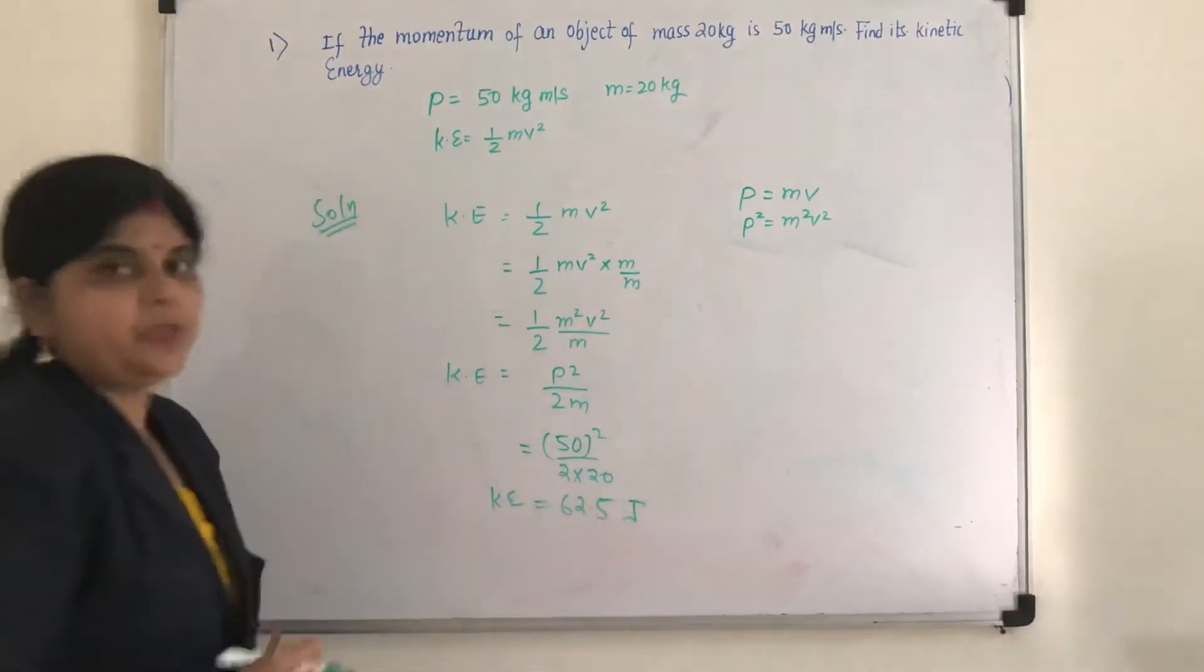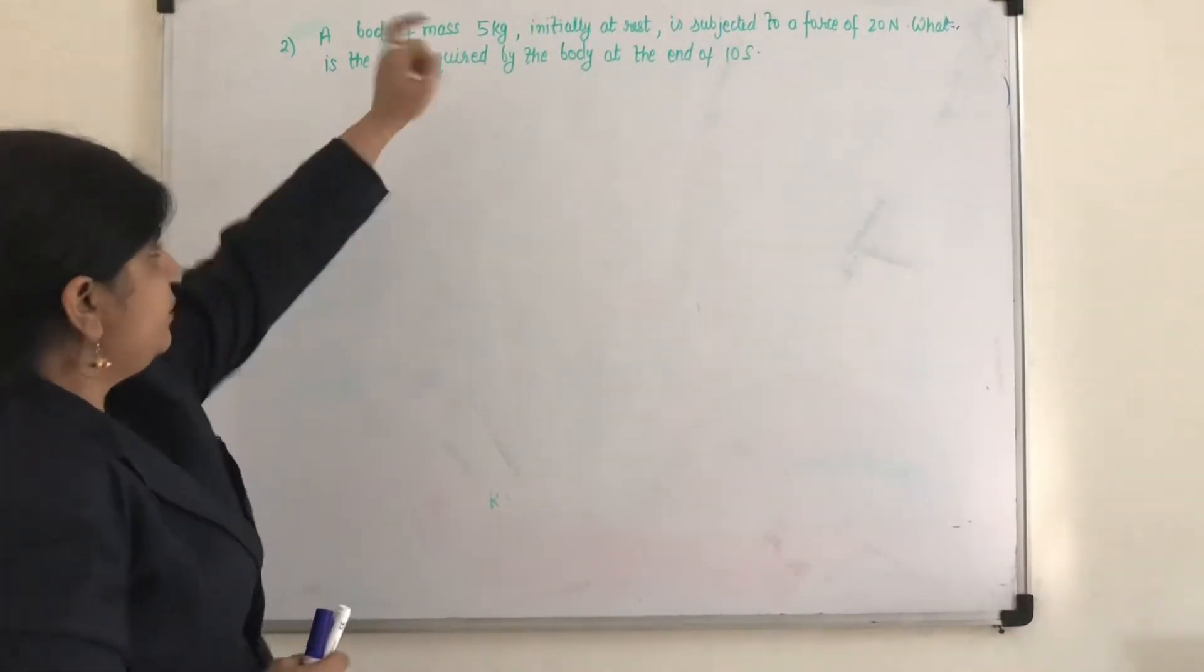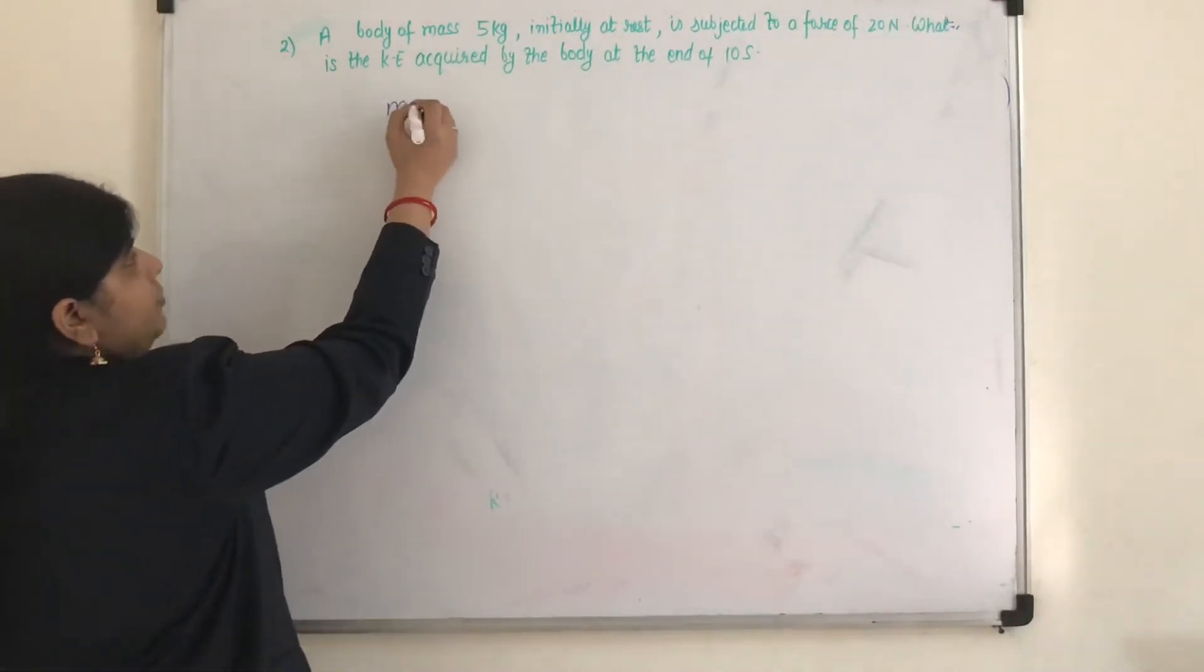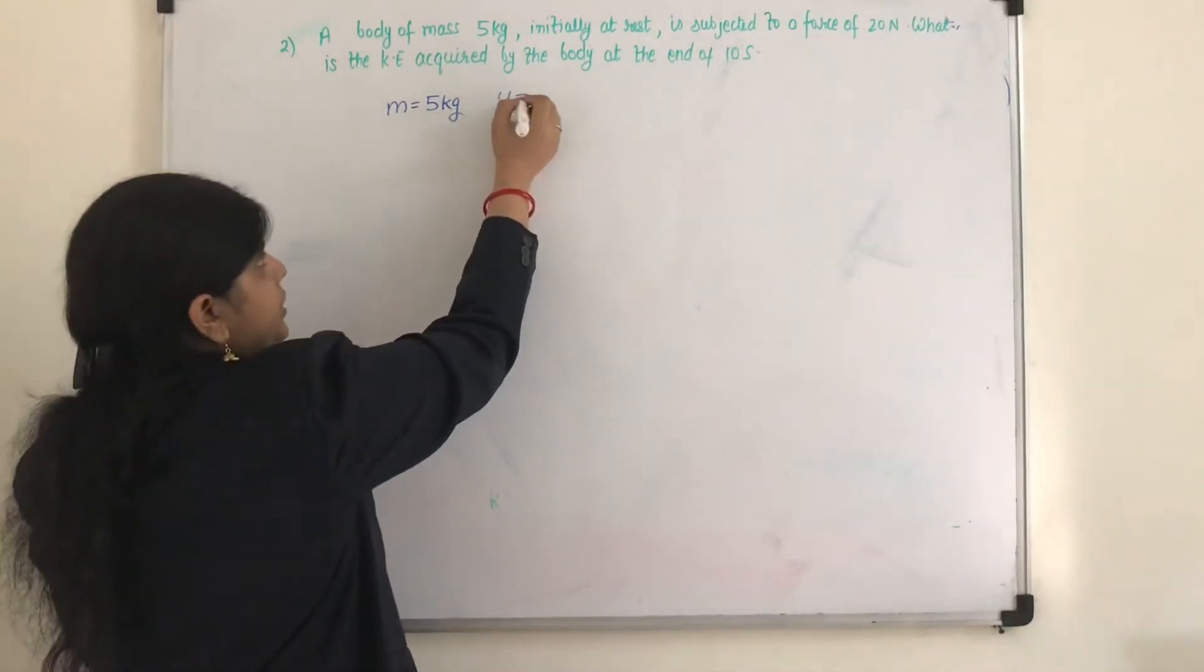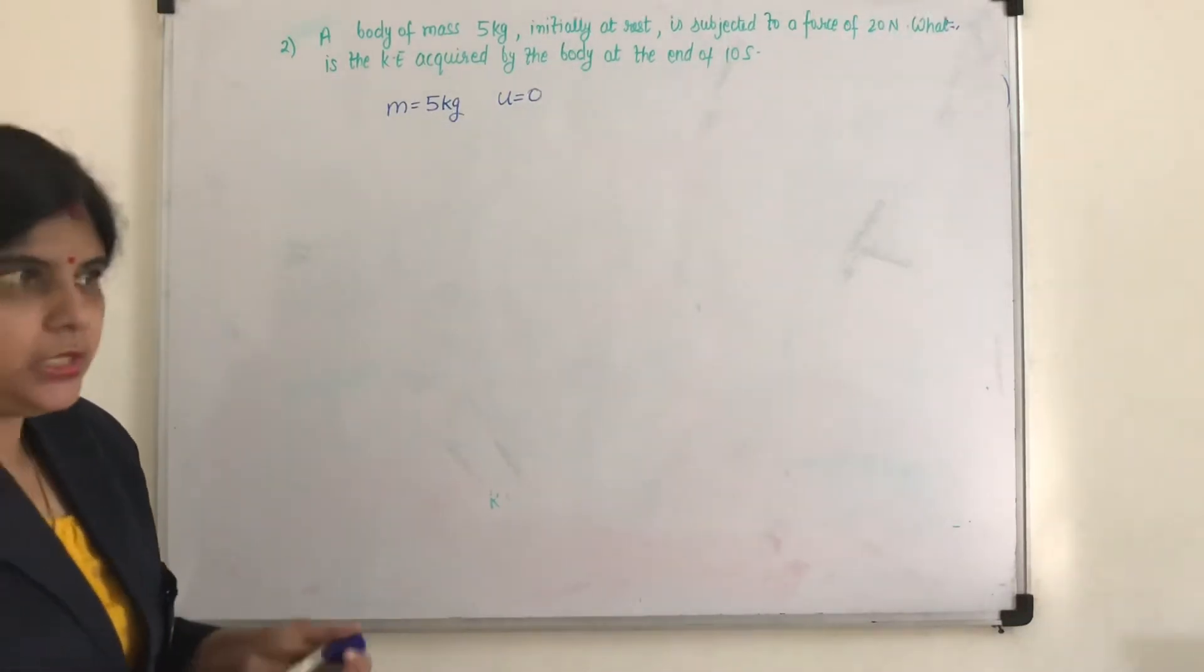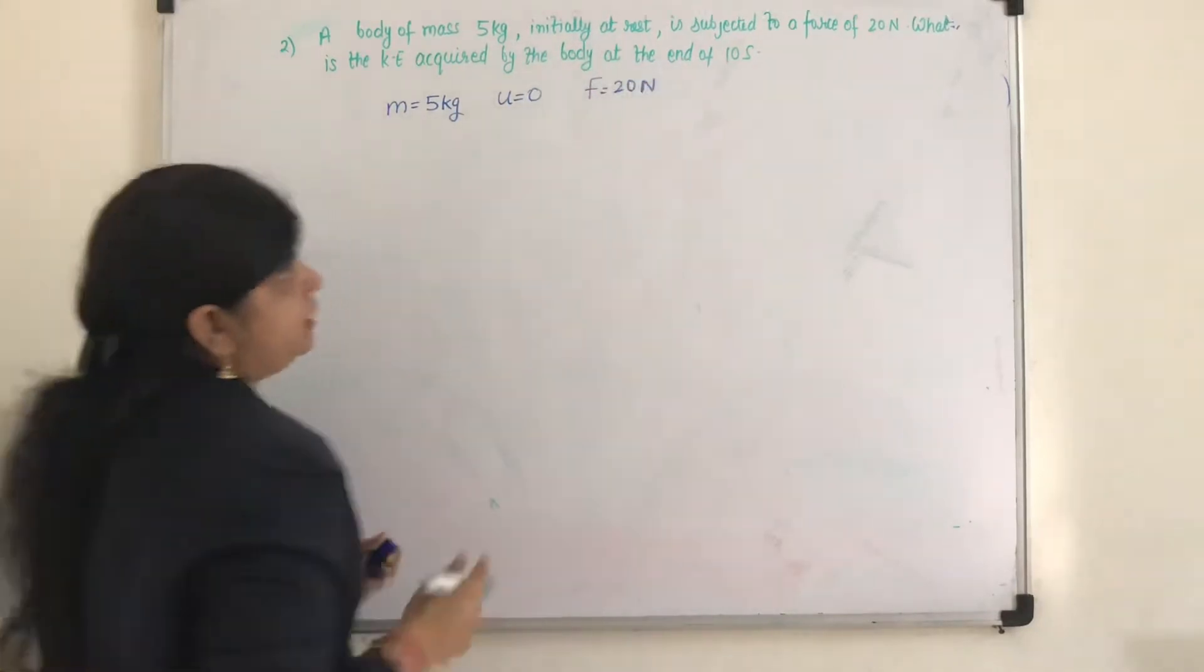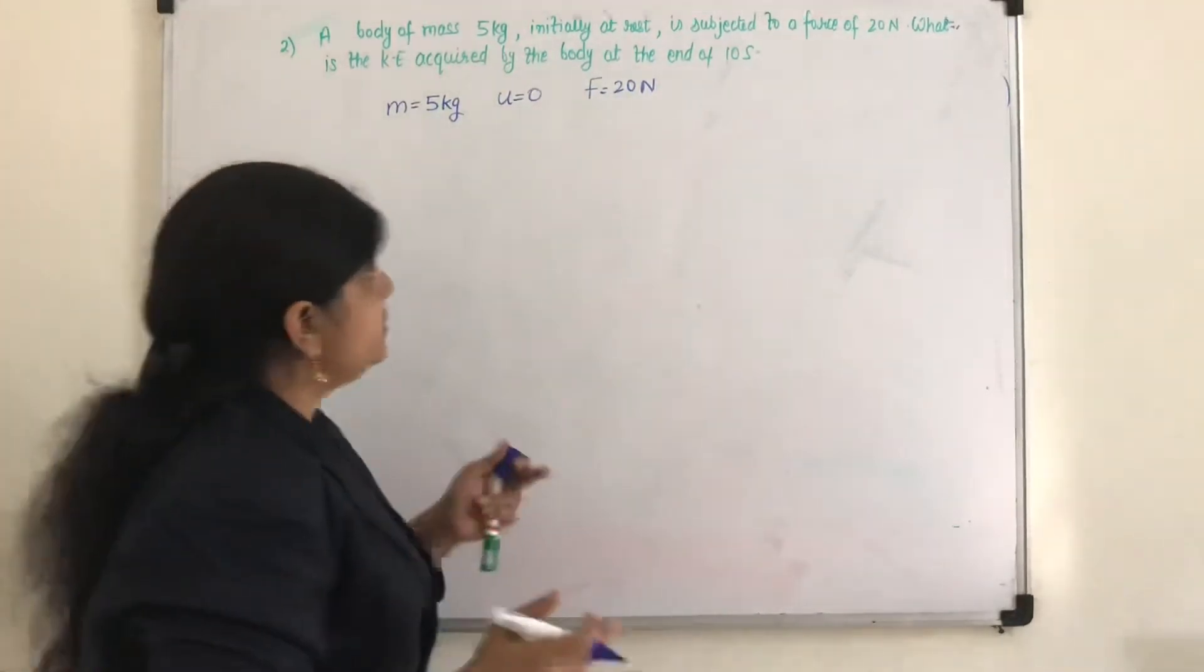Let us do one more on the kinetic energy. A body of mass 5 kg is initially at rest. Initially at rest means U is 0. Is subjected to a force of 20 Newton. So F value is 20 Newton.